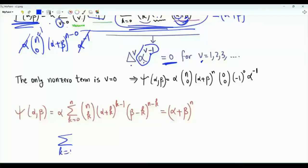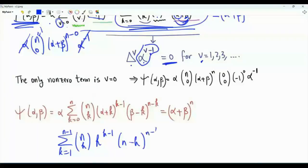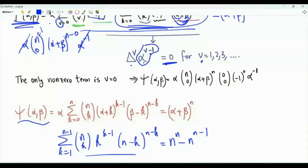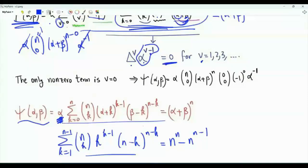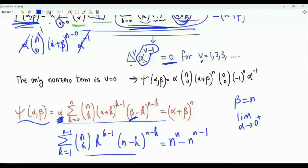Recall that the objective is to prove the sum k from 1 to n minus 1 of n choose k, times k to the power k minus 1, times n minus k to the power n minus k, equals n to the n minus n to the n minus 1. A visual inspection tells us we need beta equal to n and alpha equal to 0, but we cannot set alpha equal to 0 directly since it appears in the denominator. Instead, we set beta equal to n and take the limit as alpha tends to 0.